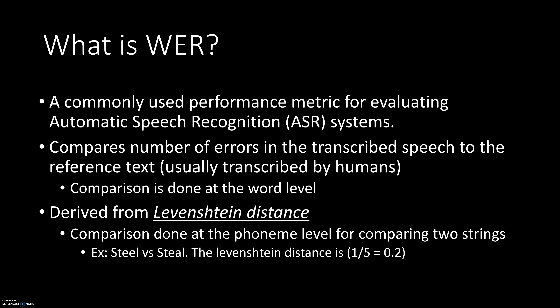Before we understand how to actually calculate WER, we will understand what is Levenshtein's distance, because WER is actually derived from Levenshtein's distance. Let's take a look at two words: we have 'steel', S-T-E-E-L, and another word 'steal', S-T-E-A-L. If you want to compare these two words according to Levenshtein's distance, we compare them at the phoneme level — letter by letter — and compare the difference. The total number of letters in the reference word 'steel' is five, and there is just one letter difference between the two. So the Levenshtein's distance is one divided by five, which is 0.2.